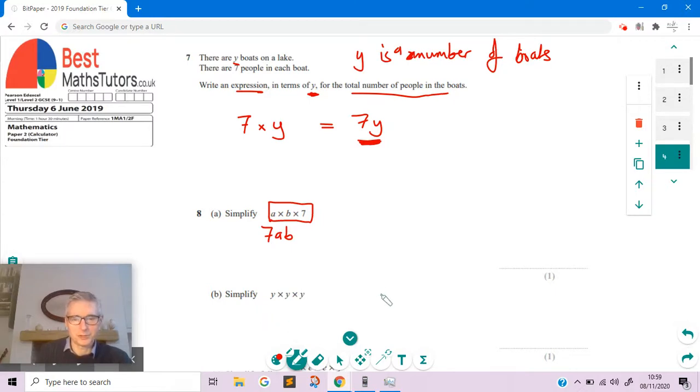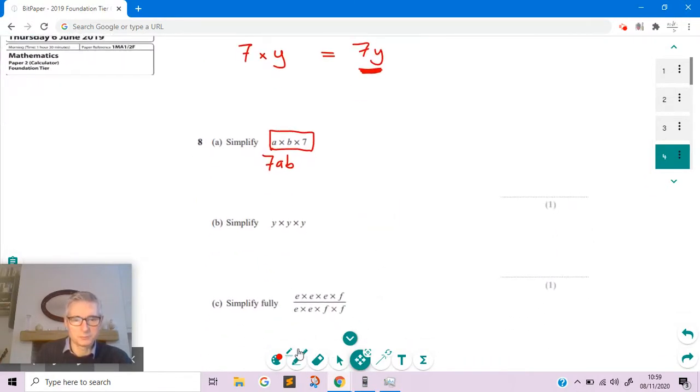Now this one, Y times Y times Y can be simplified. We could write that as Y, Y, Y. But in fact, when we're multiplying it by itself, it means we can write a power here. The power in this case is three, because we're multiplying it by itself one, two, three times. So that's why the power is three.